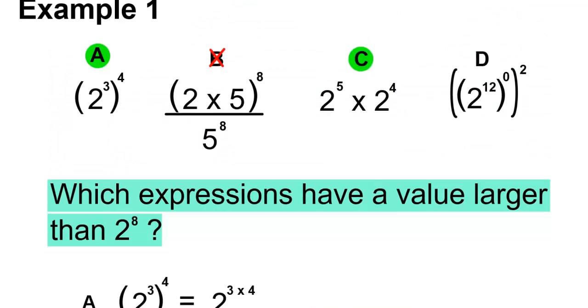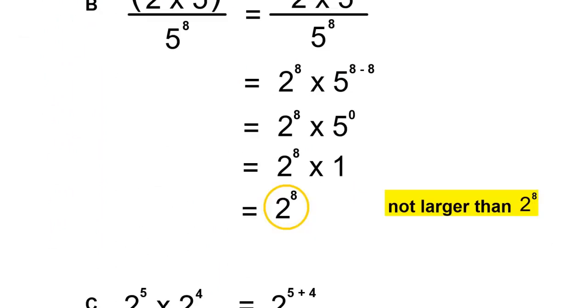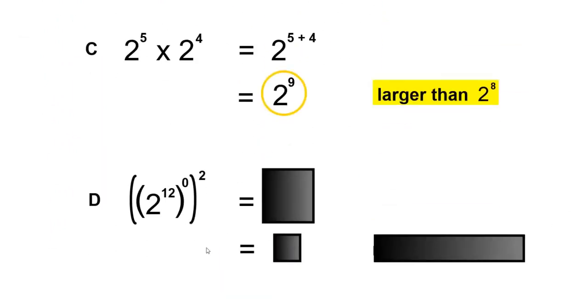And finally, we'll simplify D. For D, 2 to the 12 to the 0 is a power of a power, so we'll multiply the exponents. 12 times 0 is 0, and any power with an exponent of 0 is 1.